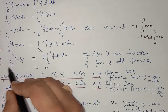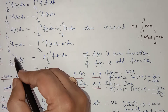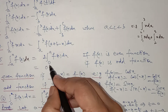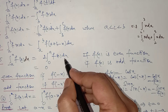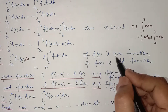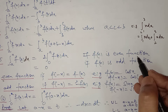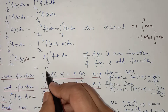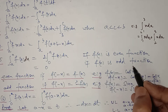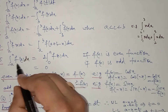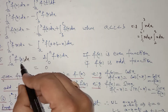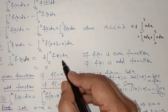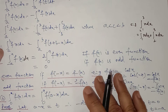The fifth property is: the definite integral from −a to a of f(x) with respect to x equals twice the integral from 0 to a of f(x) with respect to x if f is an even function, and equals zero if f(x) is an odd function.